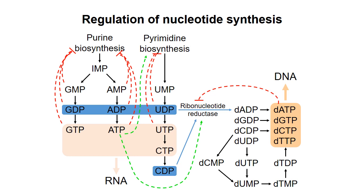Regulation of the pathways is fairly straightforward. Nucleotide products inhibit their own synthesis, ATP activates pyrimidine synthesis and reduction of ribonucleotides, and dATP inhibits synthesis of deoxyribonucleotides. So that's it for nucleotide synthesis. In the next video, I'll give a brief summary of how nucleotides are degraded.